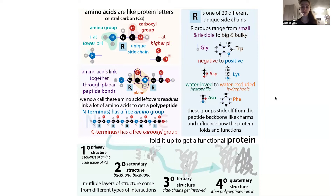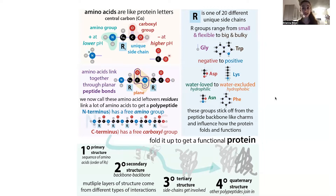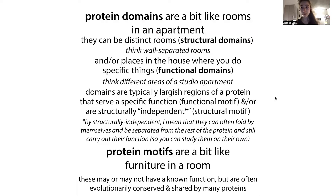If you look at a food label you'd just see 'protein' listed as some amount, but there's a huge diversity of proteins. Proteins are the molecular workers in your cells, doing all sorts of different things. Different parts of proteins do different things, and we can classify parts of proteins based on what they do or what they look like, using terms like domains and motifs — though there's wiggle room between these terms.